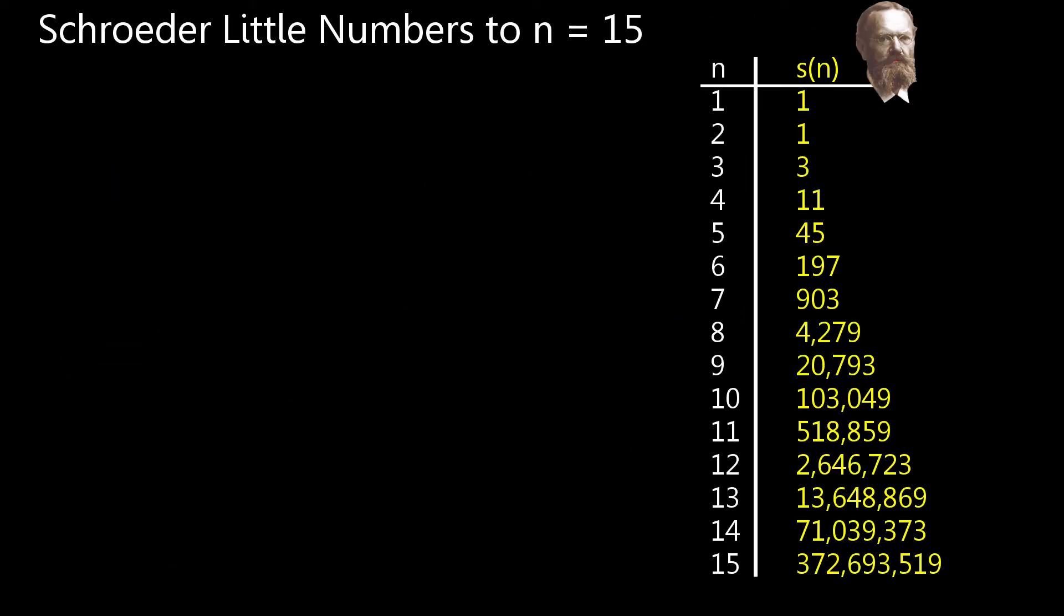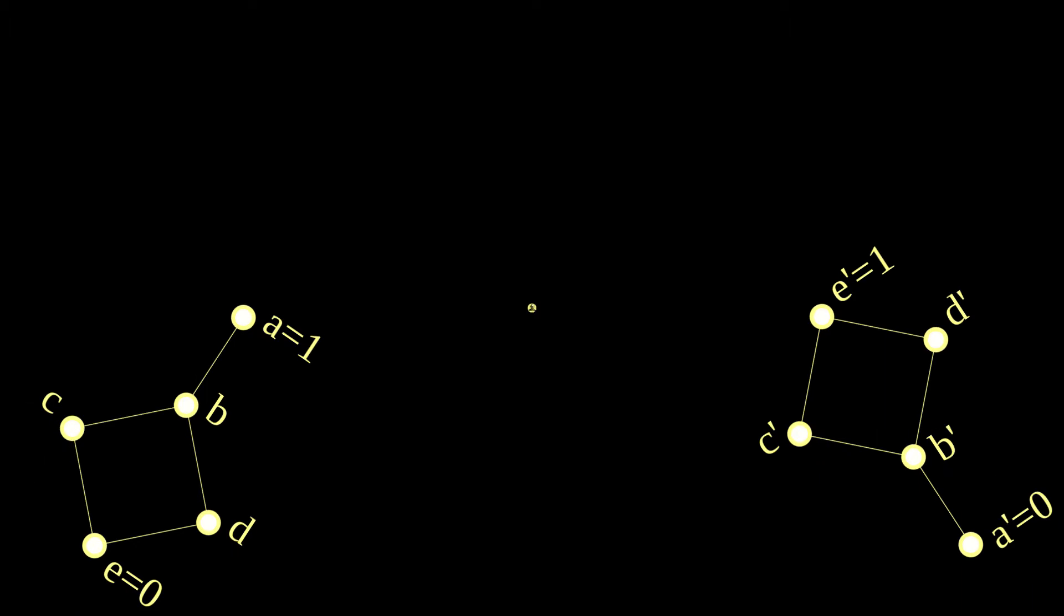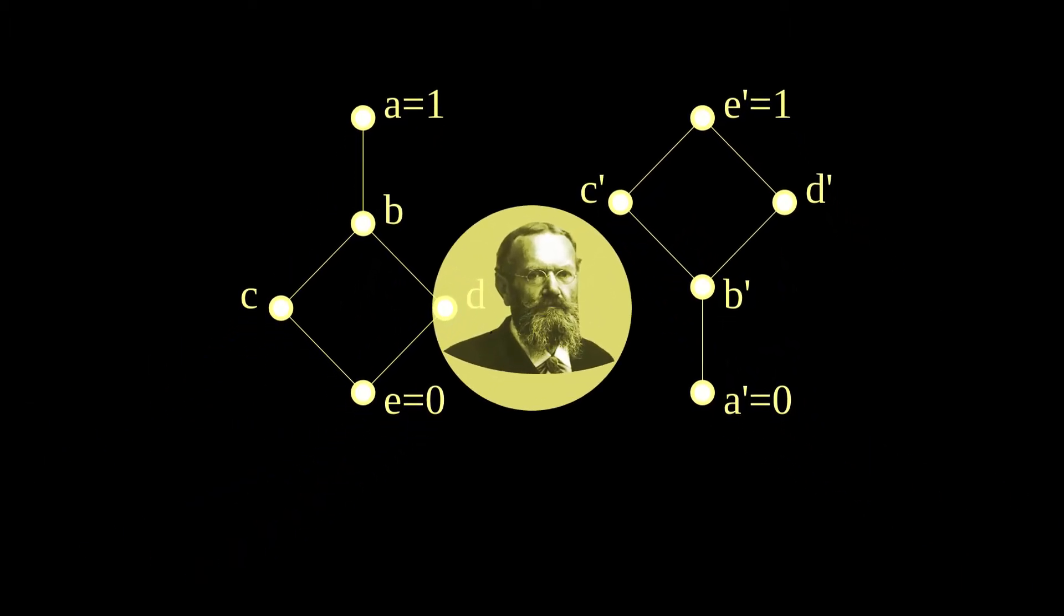Calculating up to n equals 15 shows that Schroeder's little numbers soon become very large indeed. So where does Hipparchus come in? He comes in here, at the tenth Schroeder number.